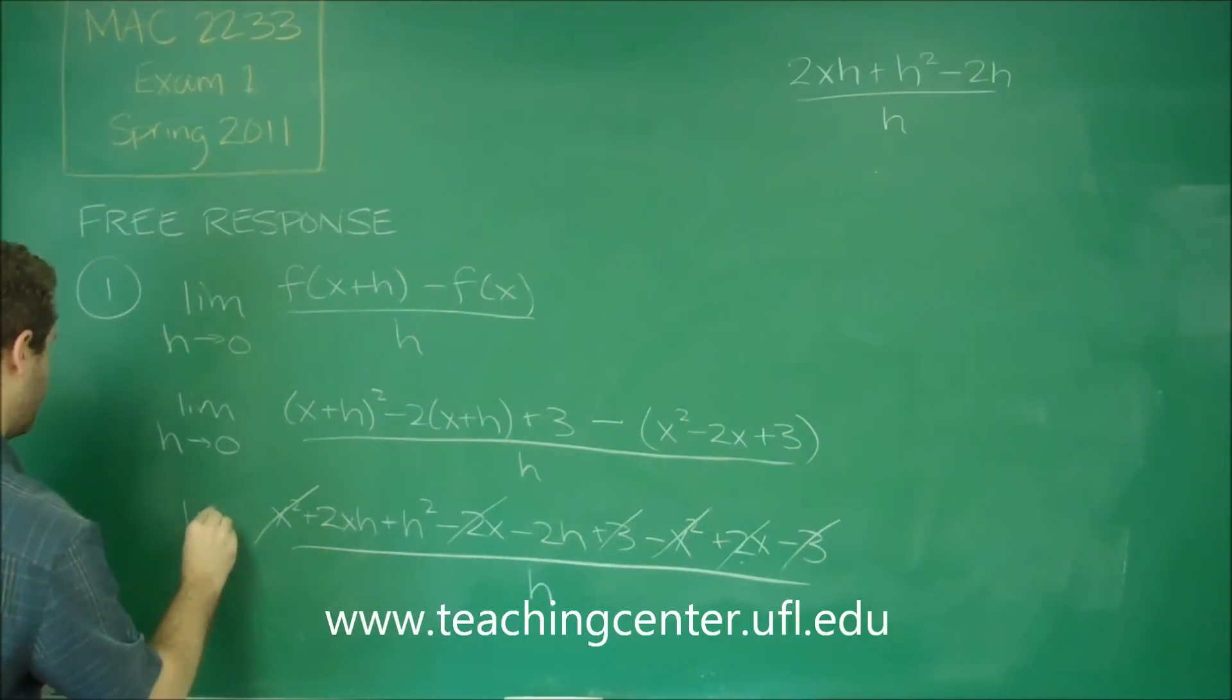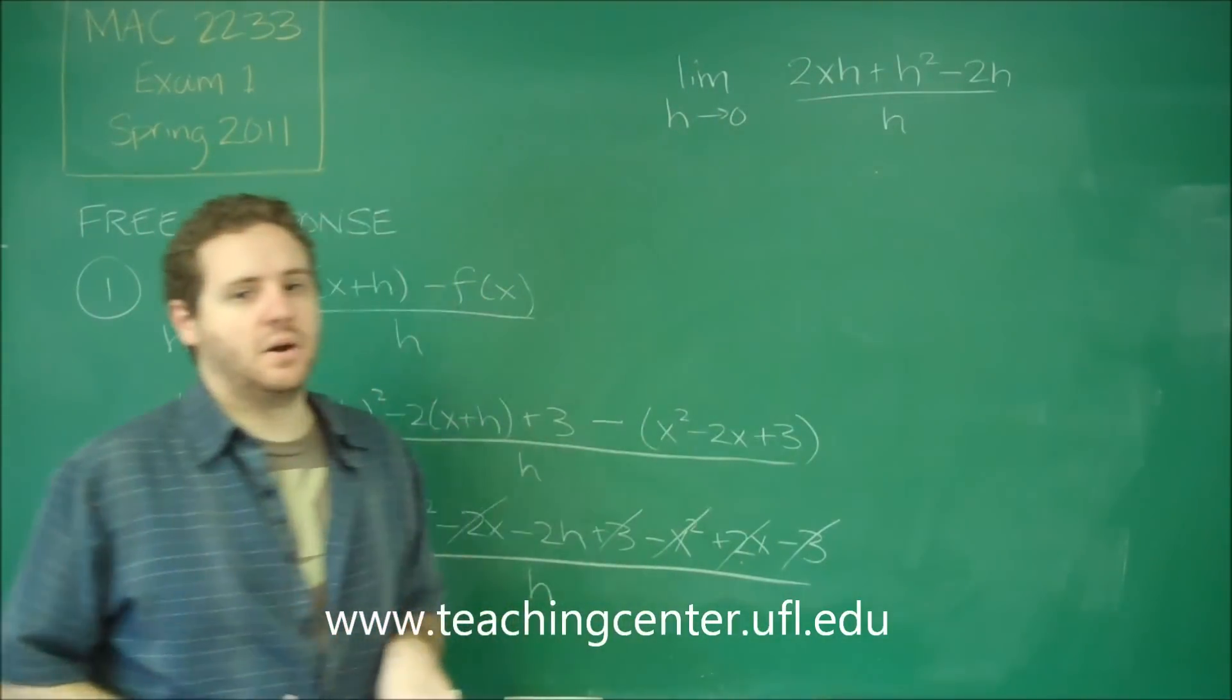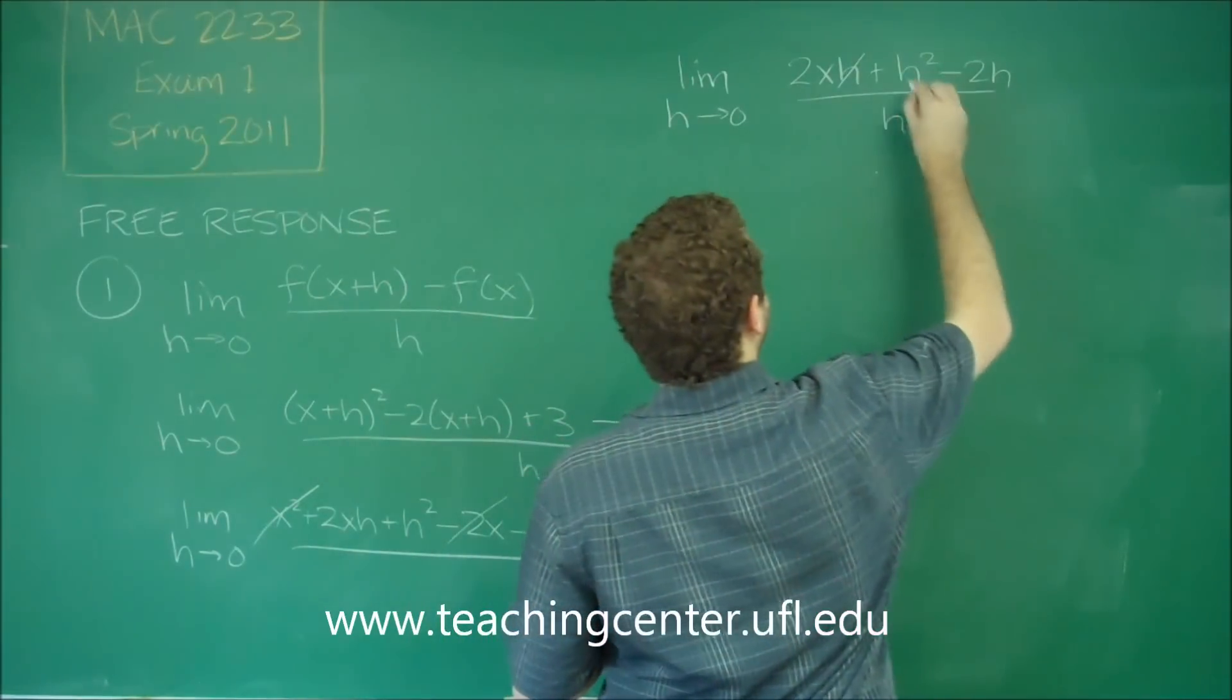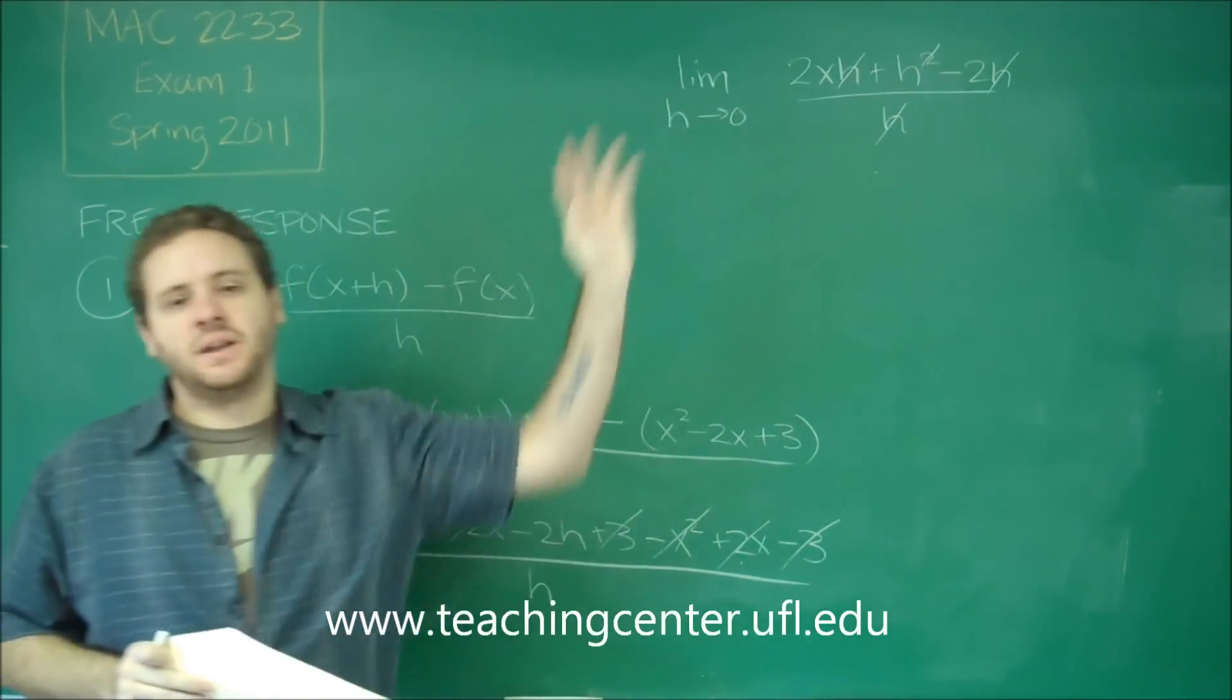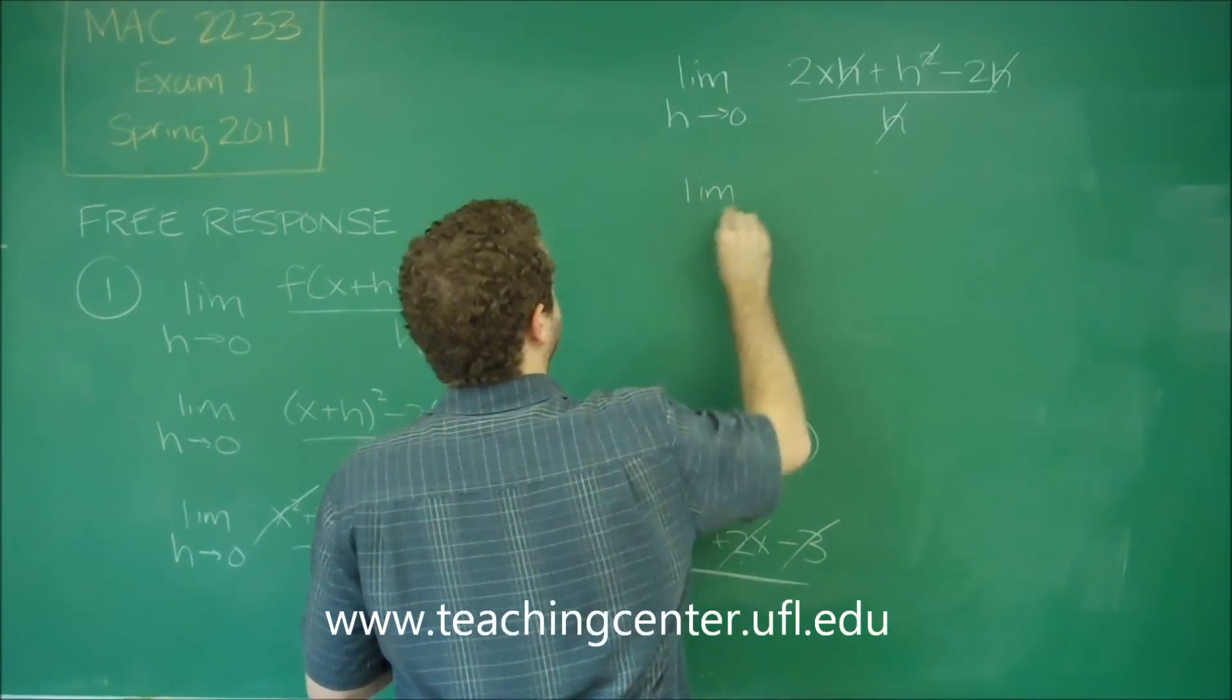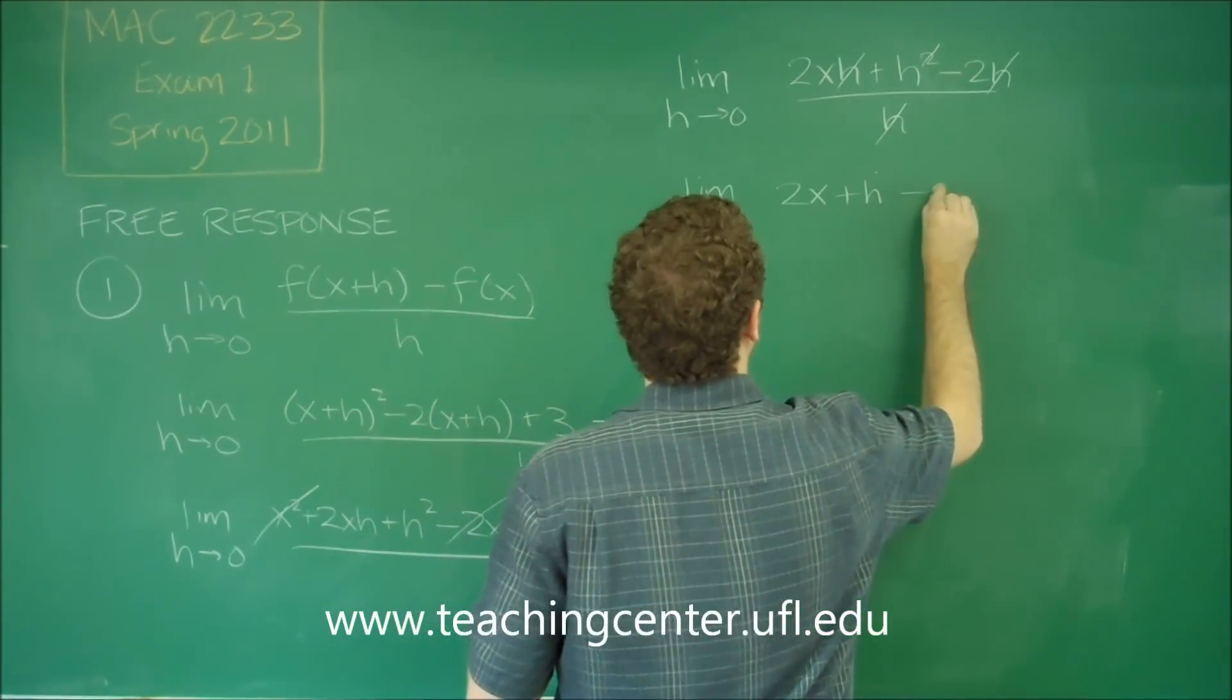So remember that this is the limit as h goes to 0. So we can't plug in 0 because we have an h on the denominator. However, if everything has an h, we can cancel out an h. So we get rid of an h from everything. If you'd rather see that as factoring out an h of everything and then cancelling out, that's fine too. But what we're left with, limit as h approaches 0 of 2x plus h minus 2.